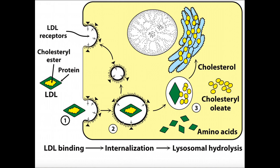The endosome will discard all of the LDL receptors — as you can see, in the form of smaller endosomes, they will actually be returned to the plasma membrane and recycled. The remainder of the contents of this endosome will combine, in step three, with a lysosome.